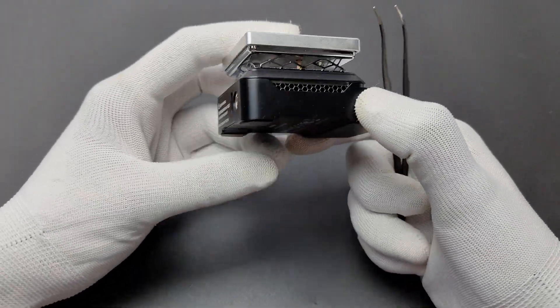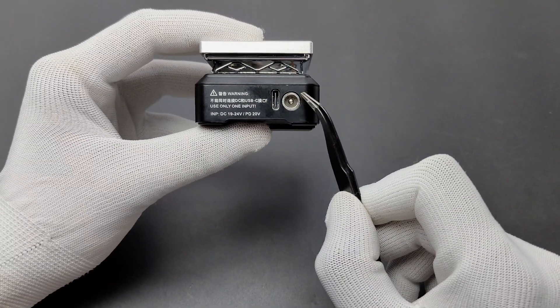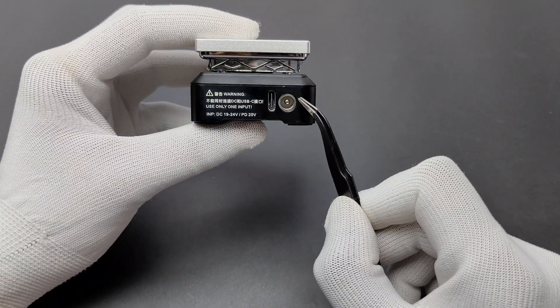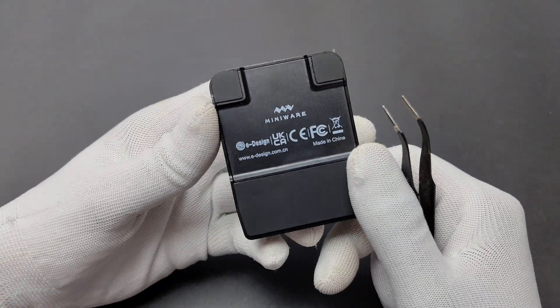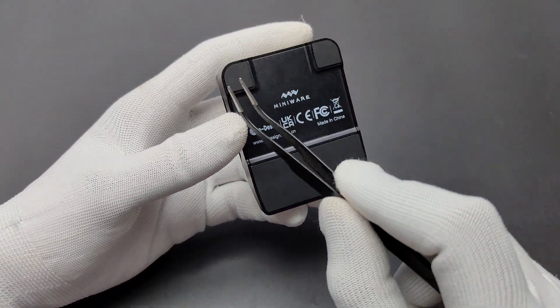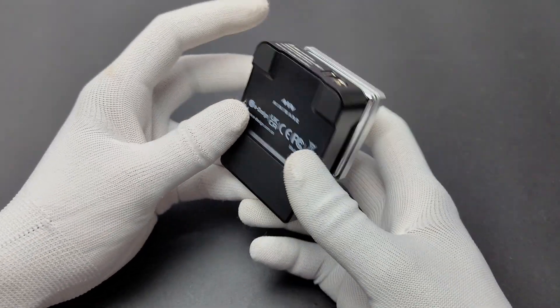On the back side we got the Type-C and DC 5525 jack for power inputs. It supports 9V to 24V input up to 150W on DC jack and standard PD 20V 100W on USB Type-C. On the bottom side it has three rubber pads which will help to get more grip on the surface.